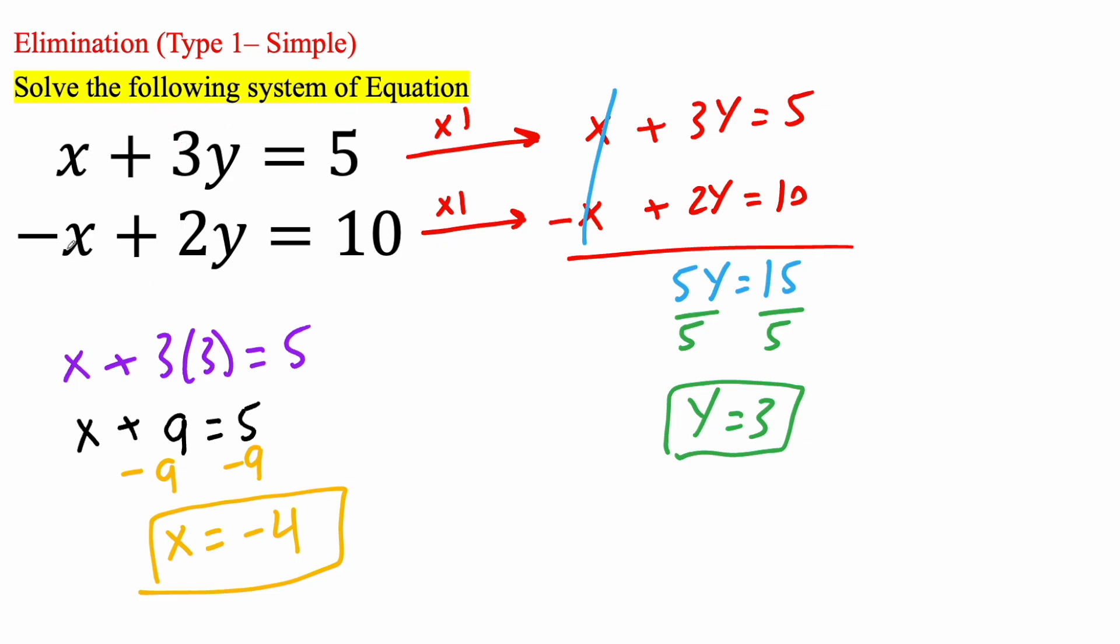Negative negative 4. So positive 4 plus 2 times 3 is 6. So 4 plus 6 is 10. And so it's a match. And that's pretty much it for this problem.